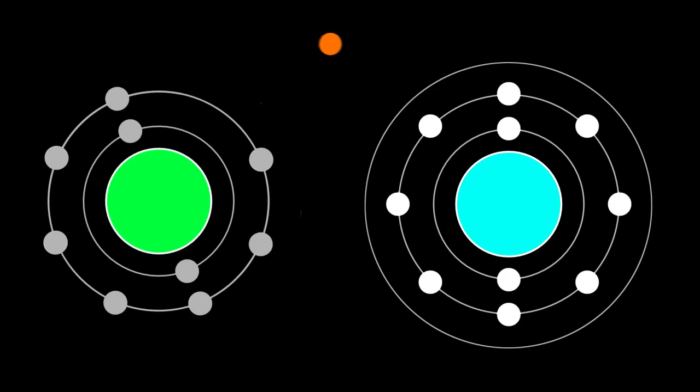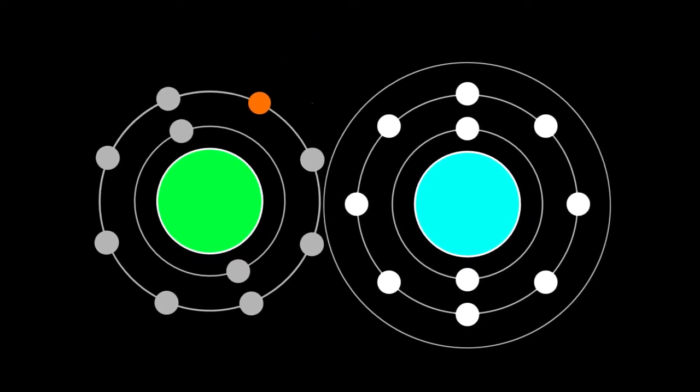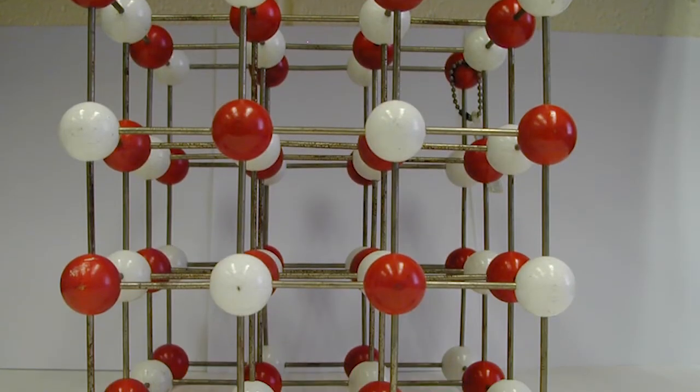A cation and anion form an electrostatic interaction which leads to the formation of an ionic salt. They appear as a 3D crystal lattice under the microscope.